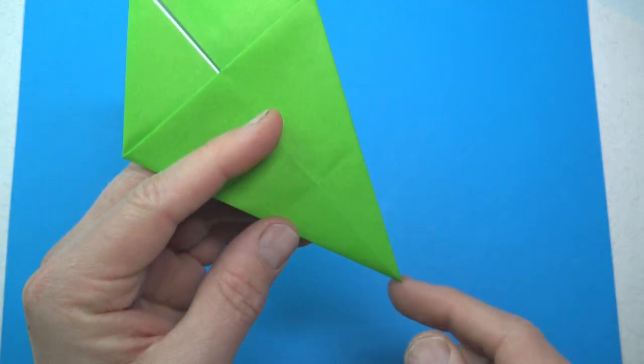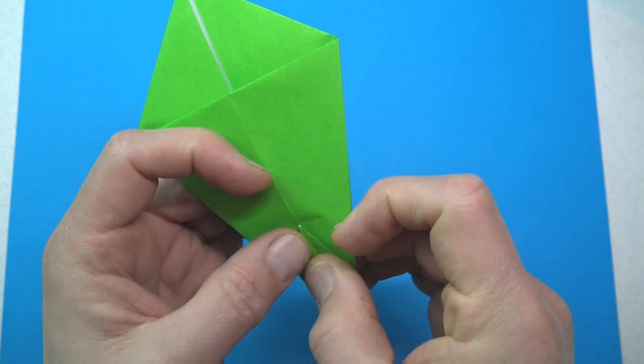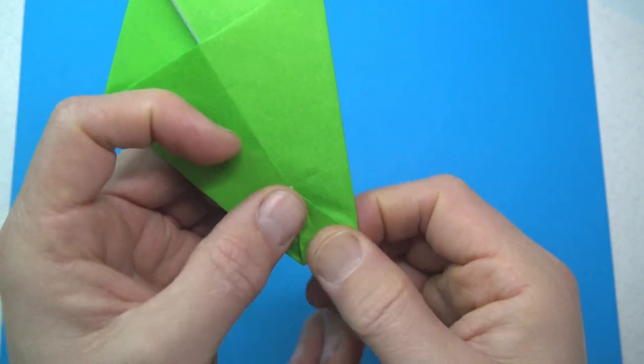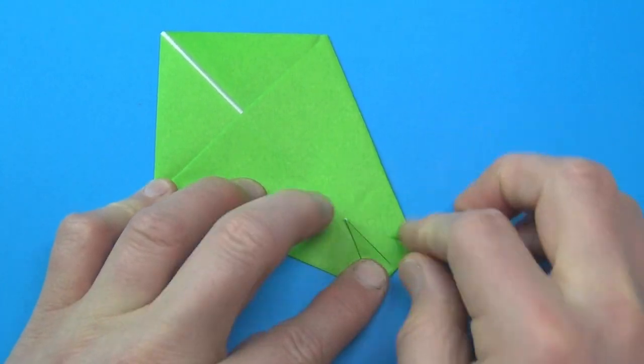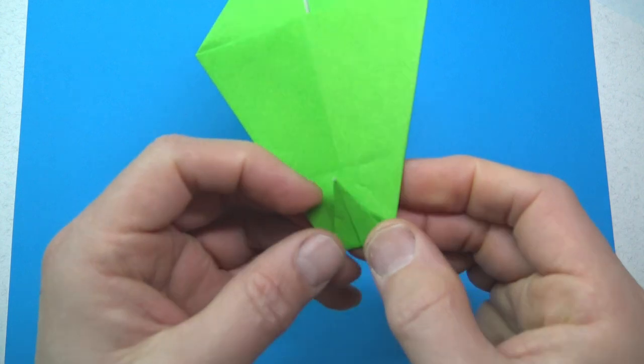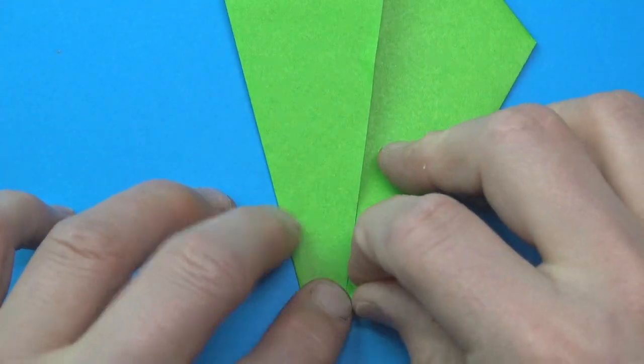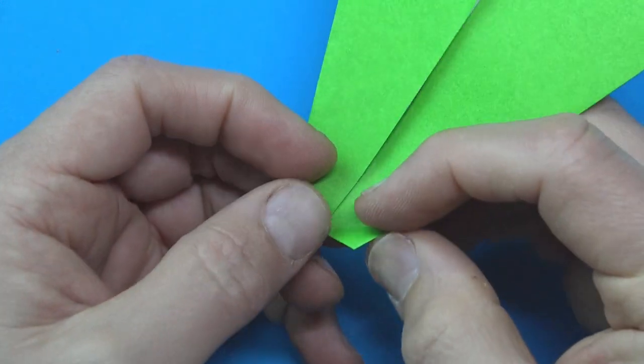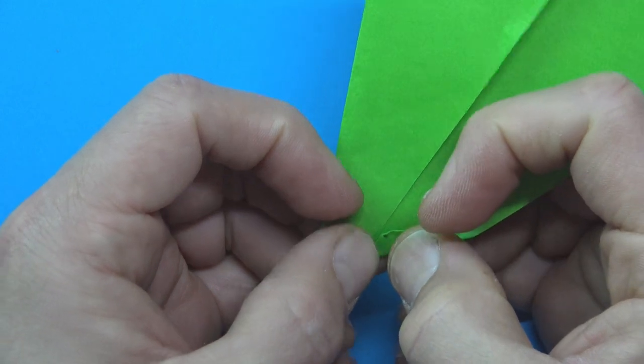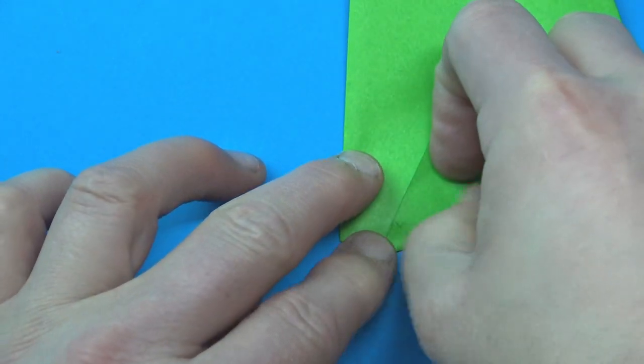And turn over. And fold this point to that intersection point. And turn over. And we're going to make a paper airplane fold. So, fold this edge onto the middle. And repeat.